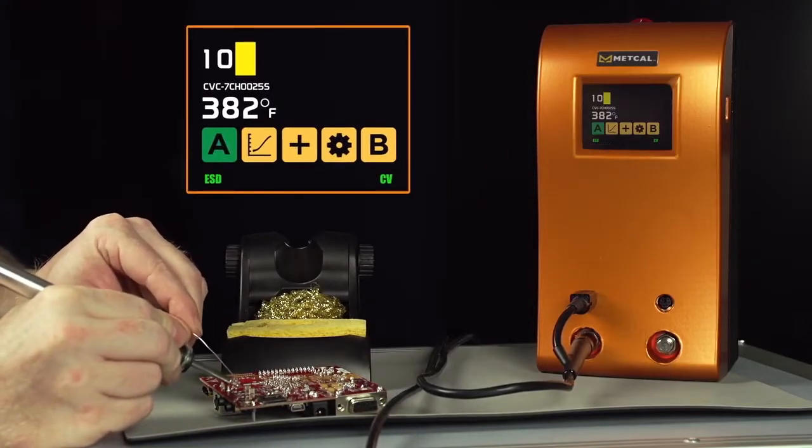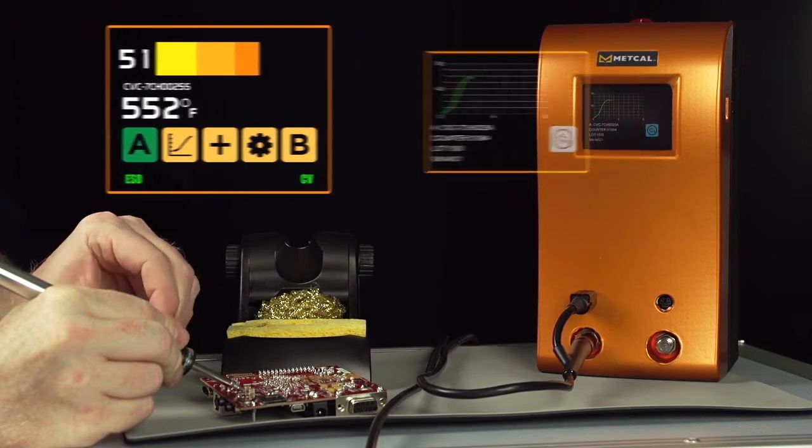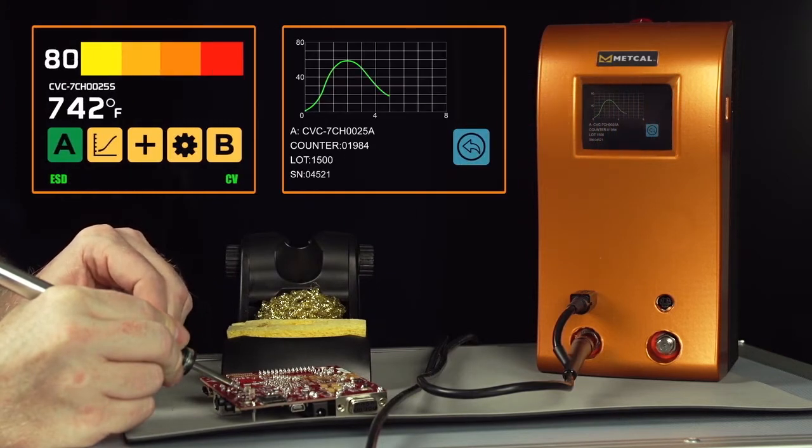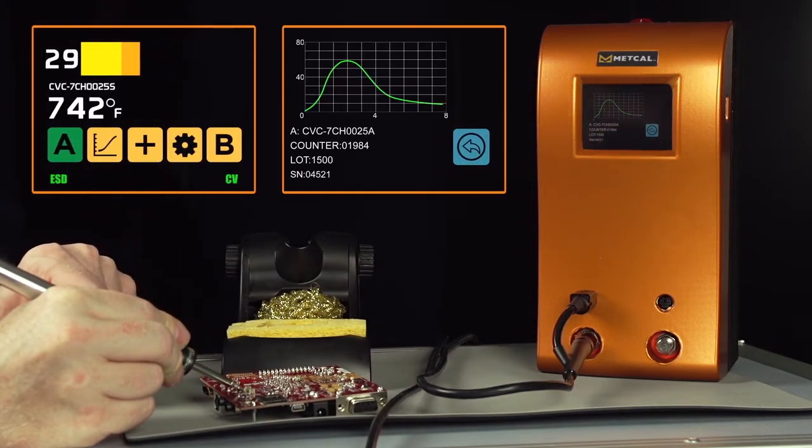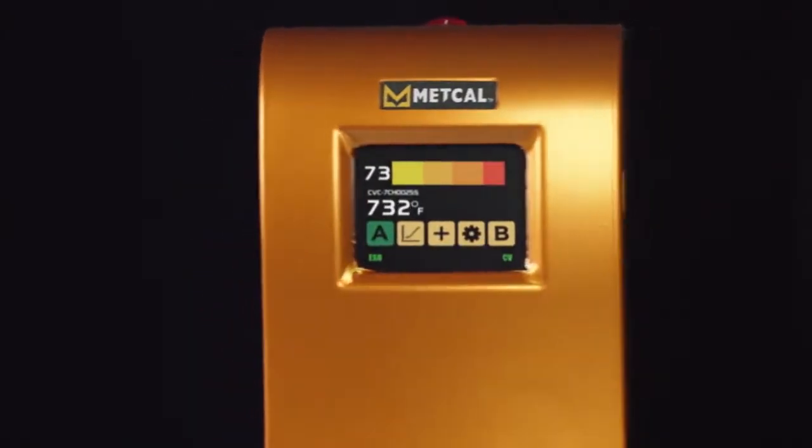Metcal's new power supply incorporates a large-color touchscreen with bold graphics, power meter, tip temperature display, password interface, and power curve display. The displayed information can be accessed via a communication port for analysis.